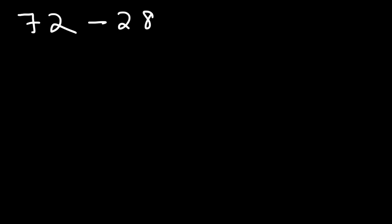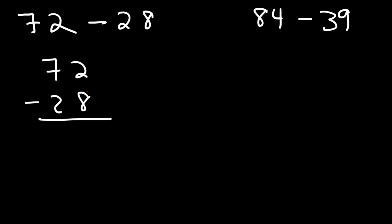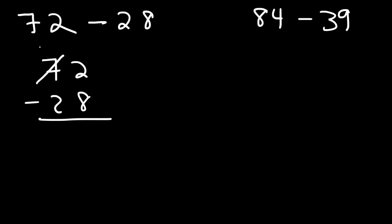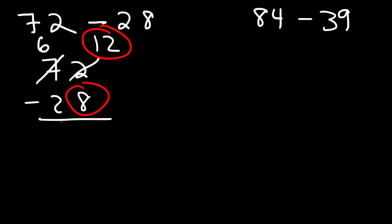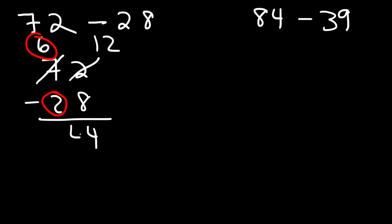Now what about 72 minus 28, and also 84 minus 39? Go ahead and try those two examples. If we start with 2 minus 8, that's going to give us negative 6, so we don't want to do that. Therefore, we need to borrow a 1. The 7 becomes a 6, and the 2 changes to 12. So now we can subtract 12 by 8, giving us 4. And then 6 minus 2 is also 4. So the answer for the first example is 44.